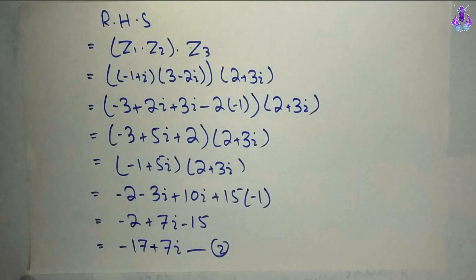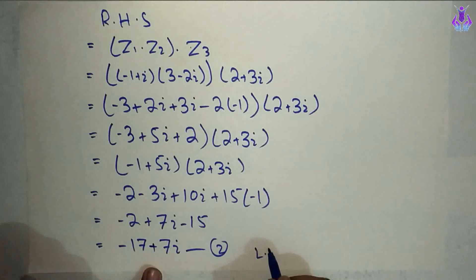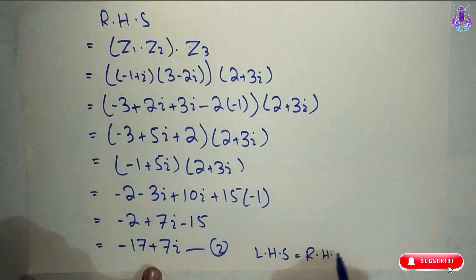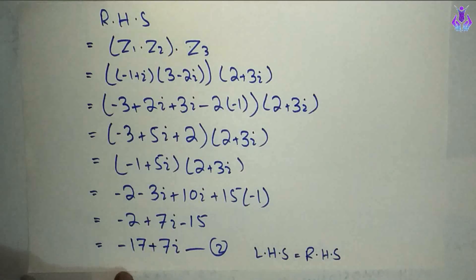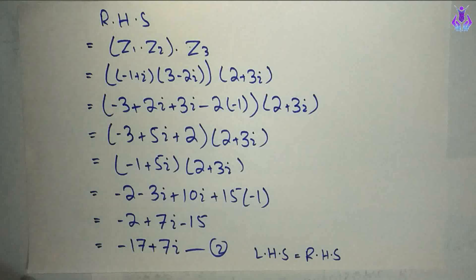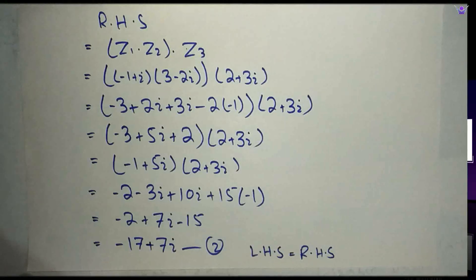From equation 1 and equation 2 we prove that left hand side is equal to right hand side. Yeh hum logon ne associative property with respect to addition and multiplication solve kar li. Aaj ke liye bas itna hi. Aap logon ka koi bhi question ho to aap log mujhse comment section mein pooch sakte hain. Inshallah apni next video mein milenge, tab tak ke liye Allah Hafiz.